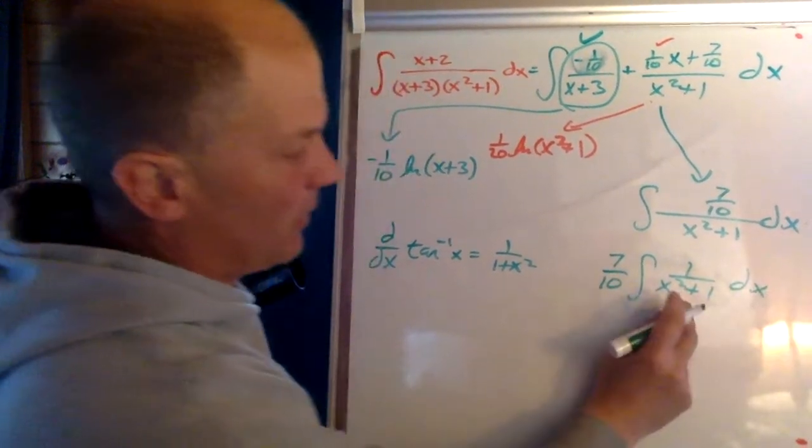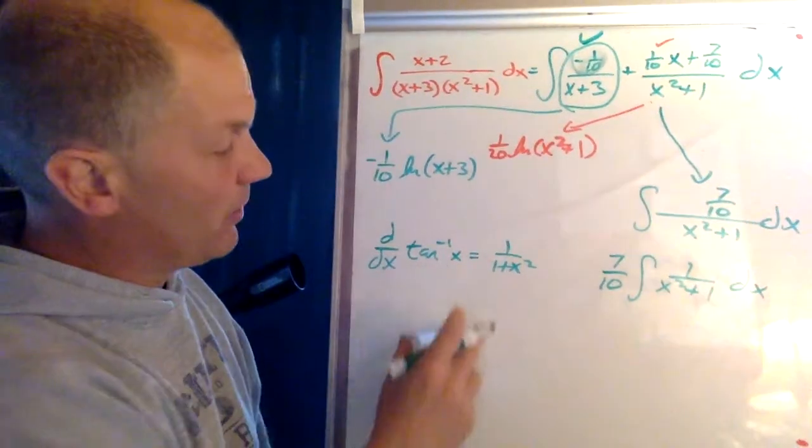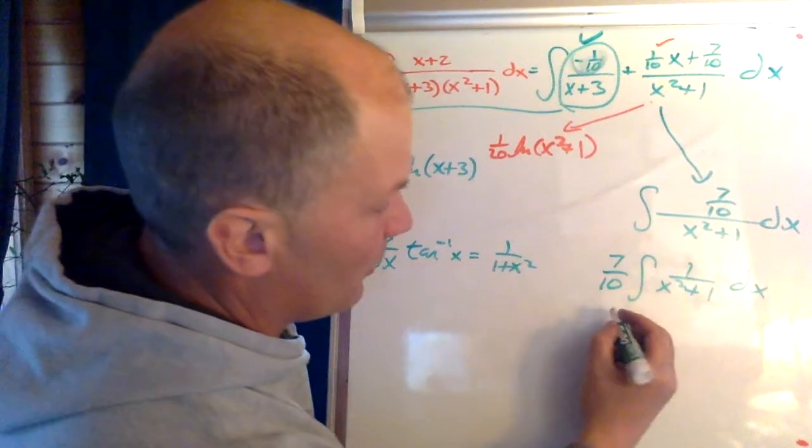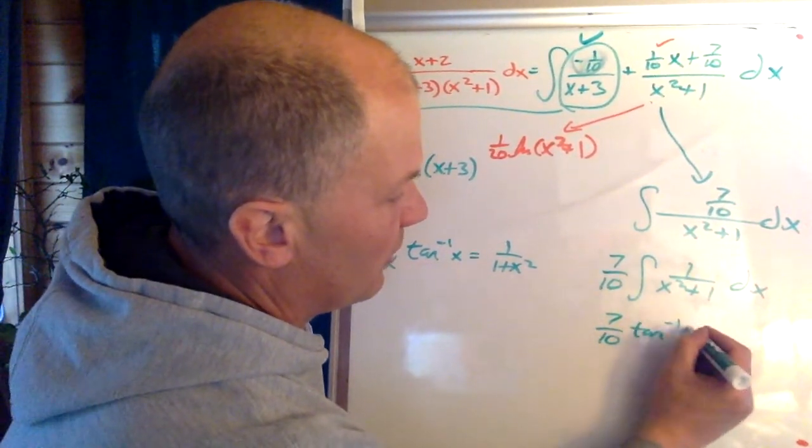And so we're left with this. Well, we know by definition, if no other way, that the integral of this is the inverse of tangent. So this becomes seven tenths inverse or arctangent of x. So now we have all three of our parts.